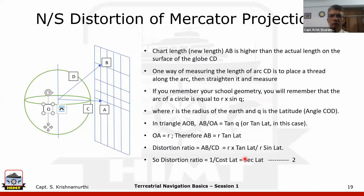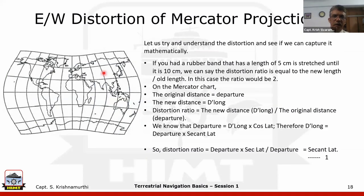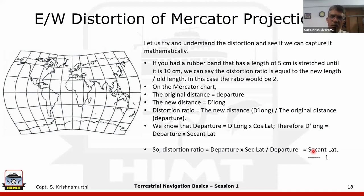Both the north-south distortion ratio and the east-west distortion ratio are equal to secant of the latitude. This is the key advantage of the Mercator chart: the distortion in the east-west direction equals the distortion in the north-south direction.